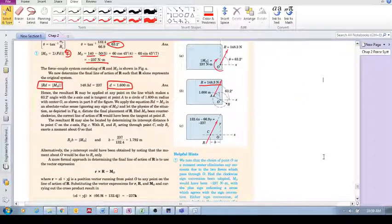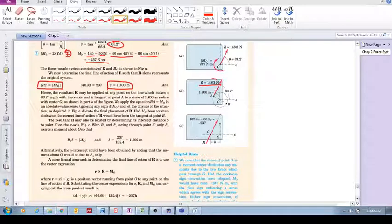In the previous video we left off by showing an equivalent force acting at point A, but actually it can act anywhere along the line of action. So what we could then ask ourselves is what is this equation of this line of action?